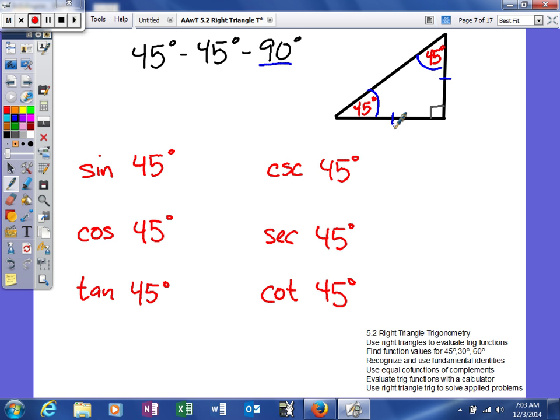All right, now in geometry, what you've done is you've studied this as x, x, and x times the square root of 2. Well, we do pretty much the same stuff. It's just in trig, instead of using variables like that, we actually use numbers. So what we're going to do is we're going to say this side is 1, 1, and then this square root of 2.